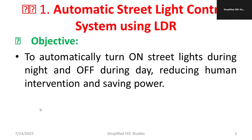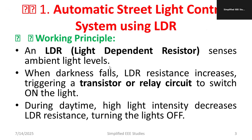The first title is Automatic Streetlight Control using a Light Dependent Resistor. The objective is to automatically turn on the street lights during the night and off during the day, reducing human intervention and saving power. That is the ultimate goal of this particular project.